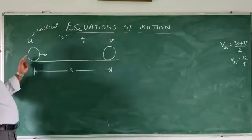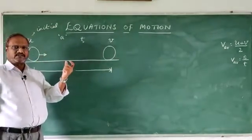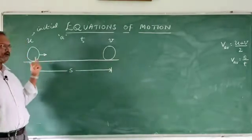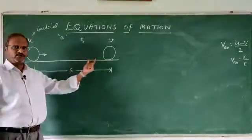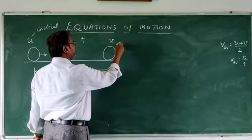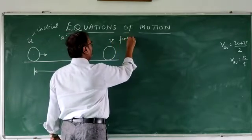And the body is moving. We are not concerned about the force acting on the body. Irrespective of the force, we say the body is moving from this point to this point. Now, when it reaches this point, the velocity is V. And we call this as final velocity.